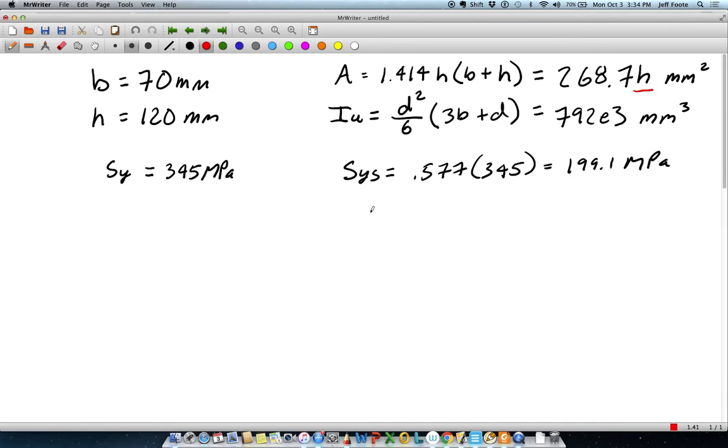When I calculate I, or rather when I use it in the equation, it's going to look like IU times 0.707H. That extra H will give it units of millimeters to the fourth, but IU, you can see here, is actually millimeters to the third.